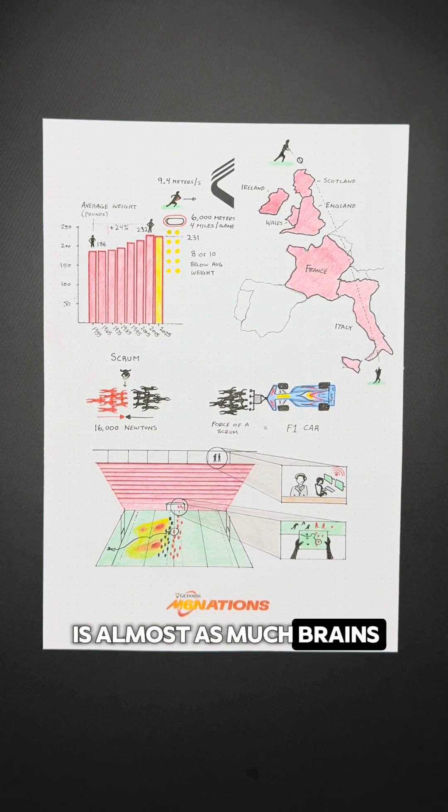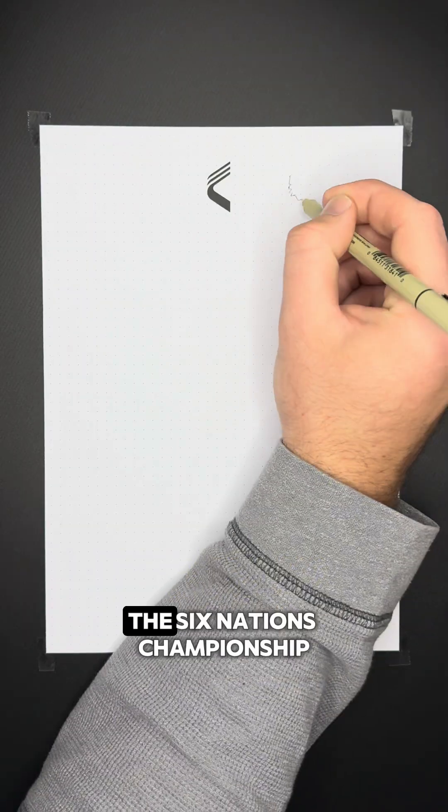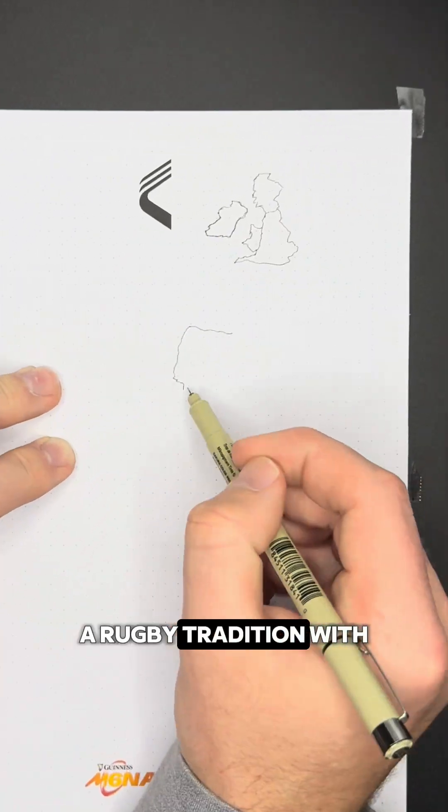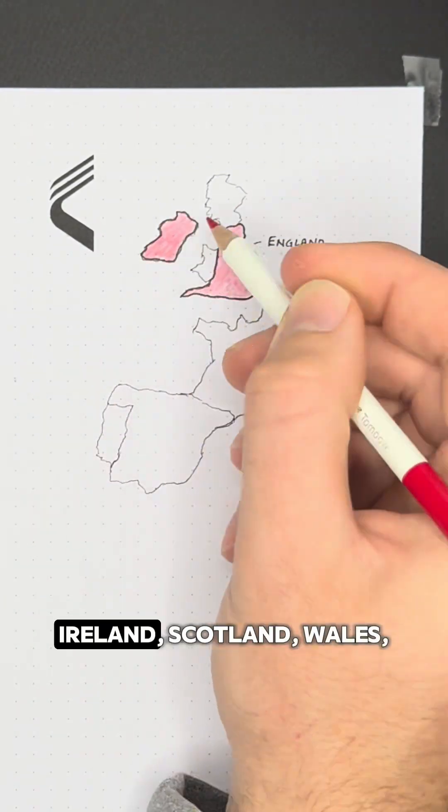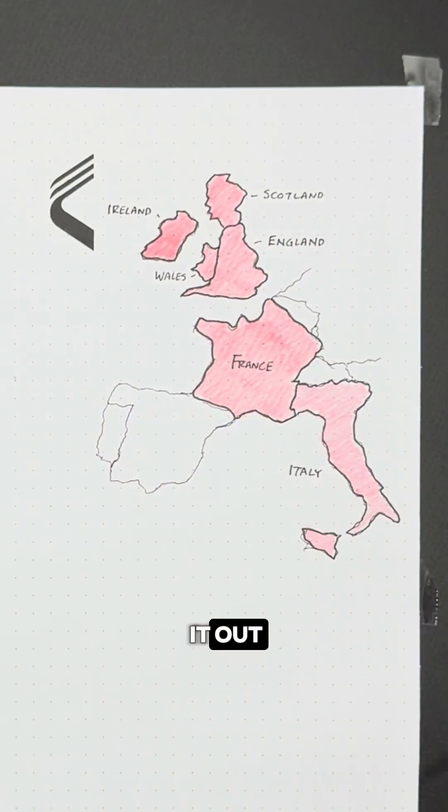The game of rugby is almost as much brains as it is brawn. Here's what I mean. The Six Nations Championship, a rugby tradition with roots more than 140 years old, kicks off this week with England, Ireland, Scotland, Wales, France, and Italy battling it out.